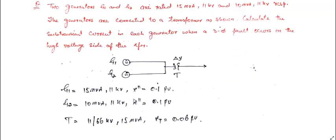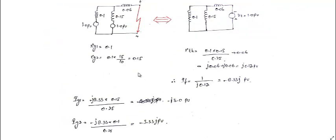The equivalent circuit shows two generators in parallel — generator one and generator two — with the fault between the fault point and neutral. Take base at 15 MVA, 11 kV. The reactance of generator one (0.1 per unit) stays unchanged since it is already on this base. Generator two's reactance changes: using the change-of-base formula, 0.1 × (15/10) = 0.15 per unit. The transformer reactance is 0.06 per unit.